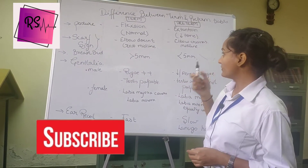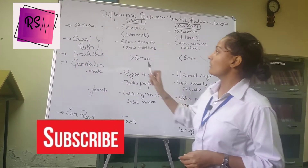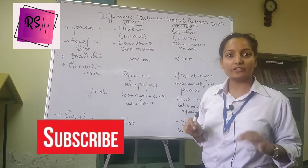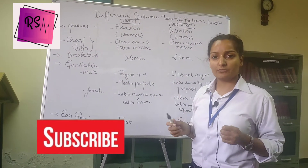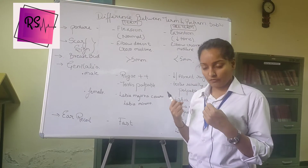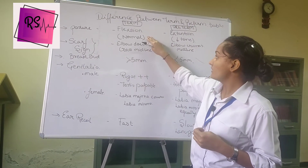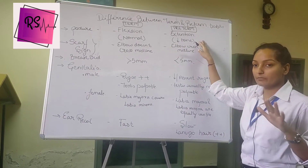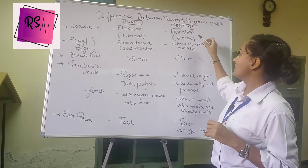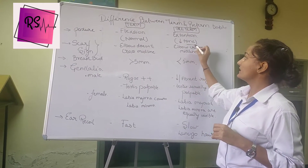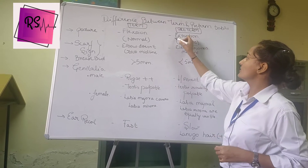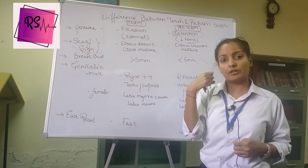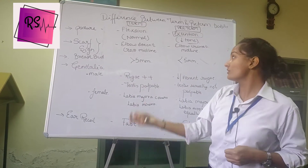The first thing we are going to talk about is the posture of the baby when the child is born. A normal child when born is in the flexion position — that is, flexed. The preterm baby will not be in the flexion position; the tone of the baby will be decreased. The position is the extension position, meaning the hand of the baby will not be flexed but will be relaxed.